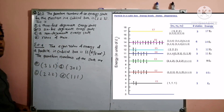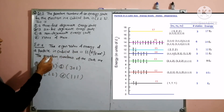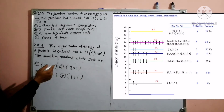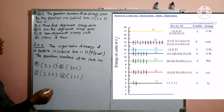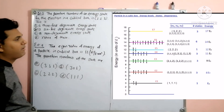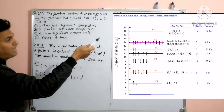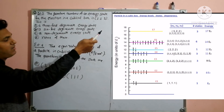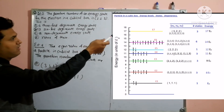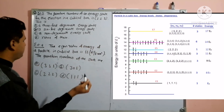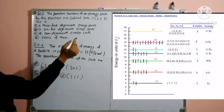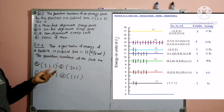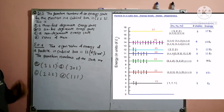Problem number four: the eigenvalue of energy of a particle in a cubical box is 11h²/(8mA²). We need to find the quantum numbers of this state. According to the energy level diagram, for energy 11h²/(8mA²), one valid combination is (3,1,1), since 3² + 1² + 1² = 9 + 1 + 1 = 11. So the correct answer is (3,1,1).